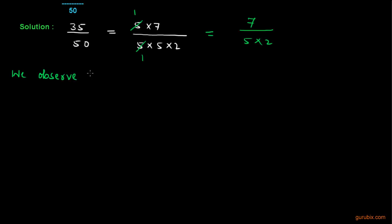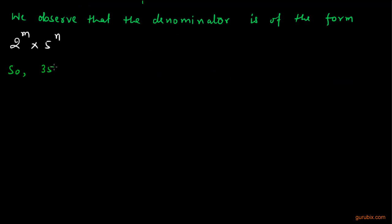Now we observe that the denominator is of the form 2^m × 5^n. Therefore, 35/50 has a terminating decimal expansion.